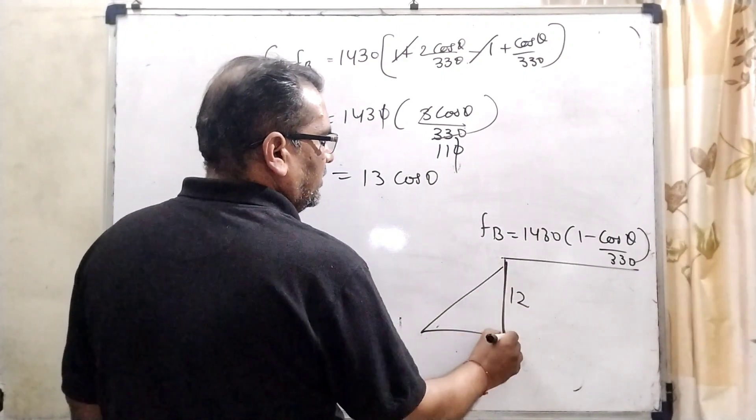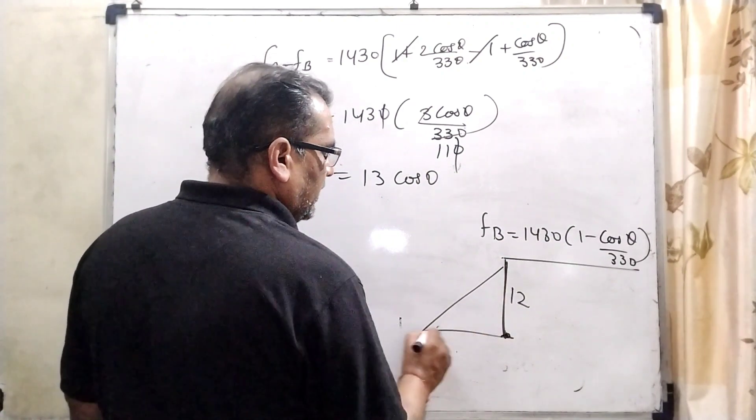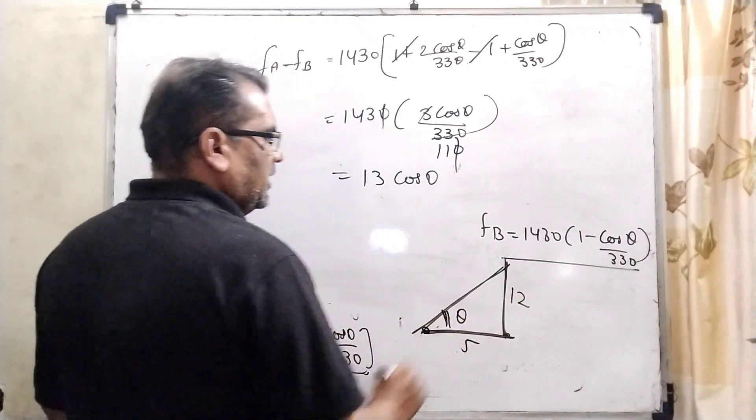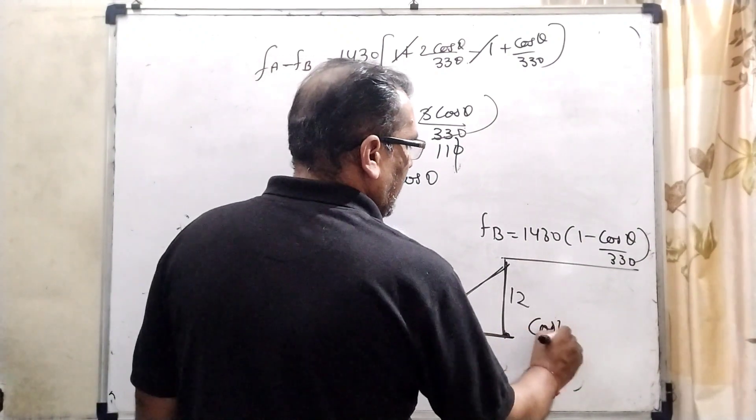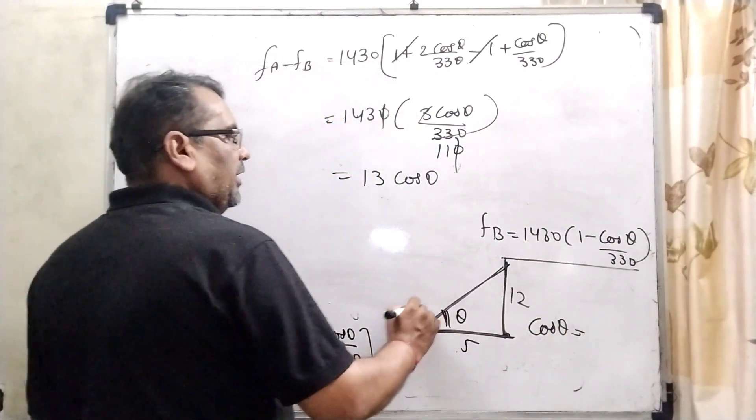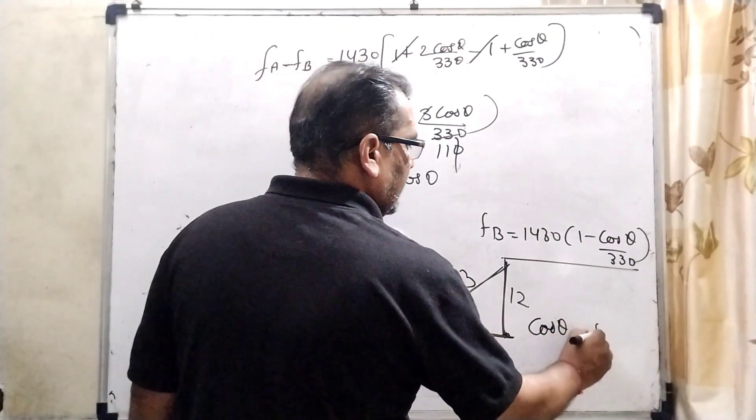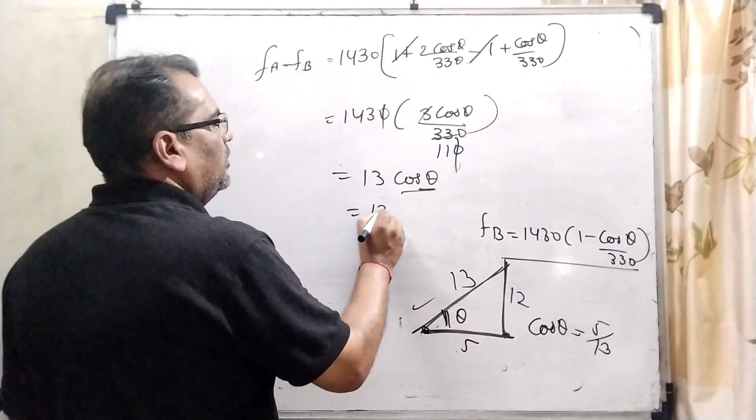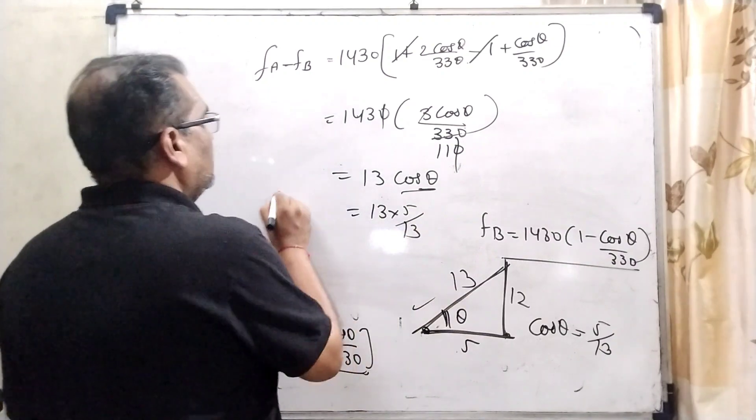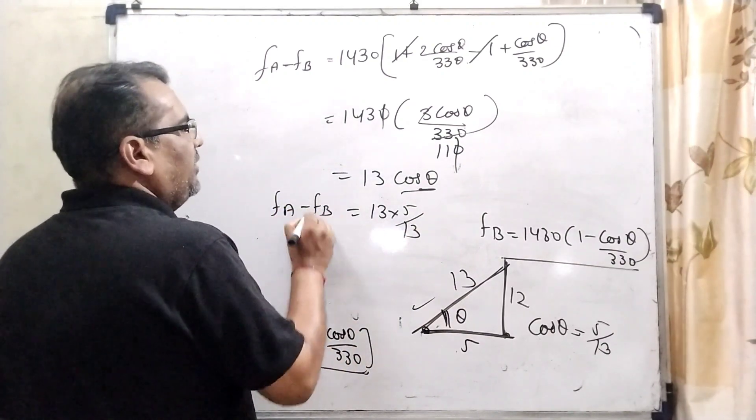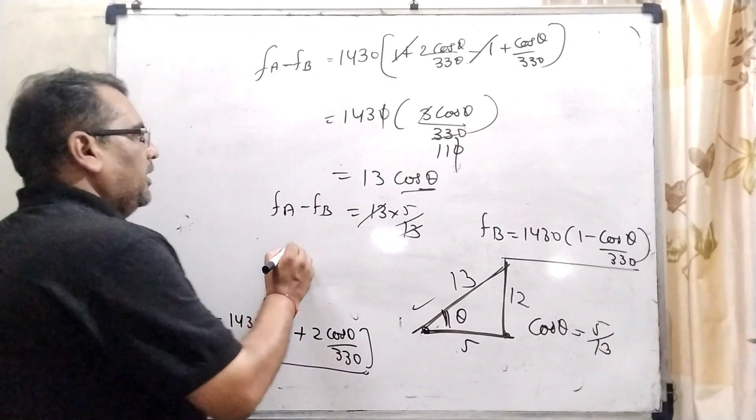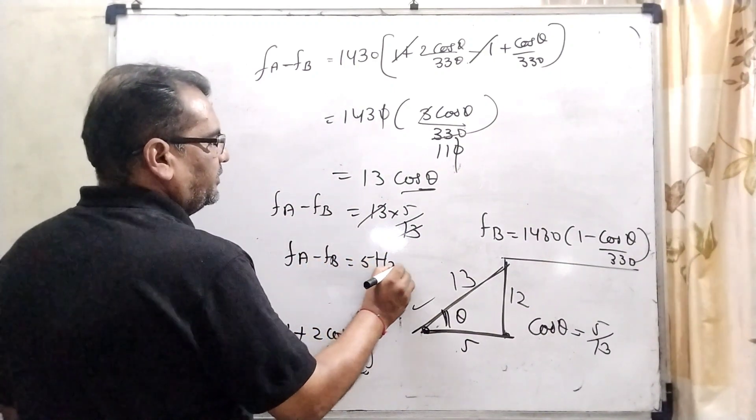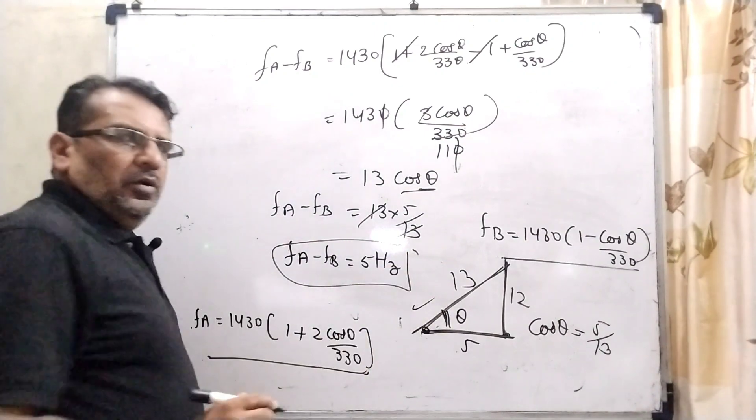Here, the third man is 12 meter high. The distance from this is 5. The angle is θ. Then cos θ, by using the Pythagorean theorem, it becomes 13. So base upon hypotenuse is 5/13. Now, substitute this value 5/13. fₐ - f_B = 13 cos θ. 13, 13 cancel out. This is the beat: 5 Hertz.